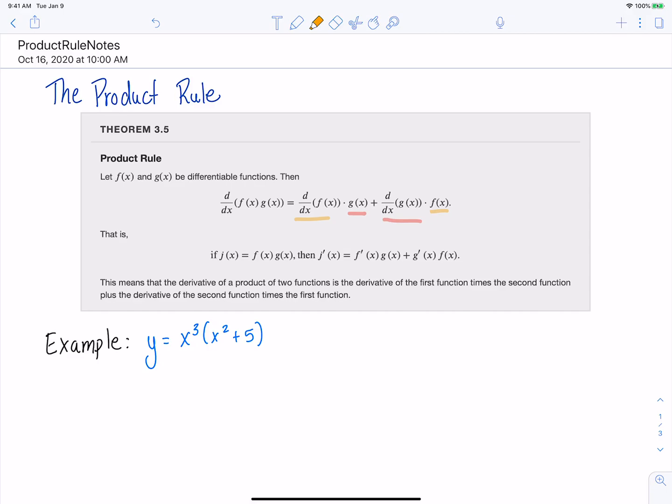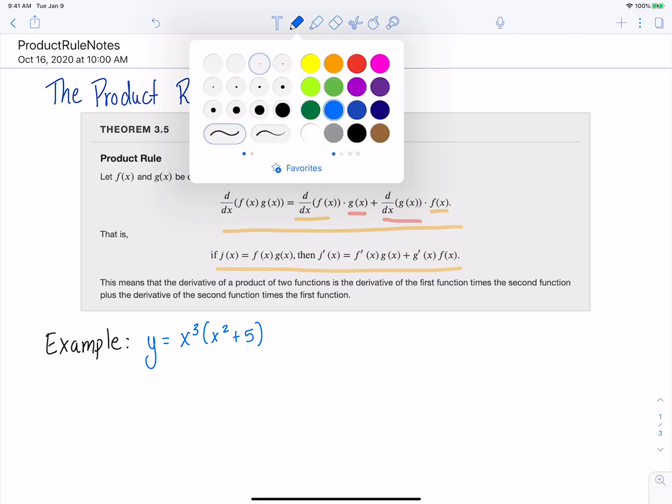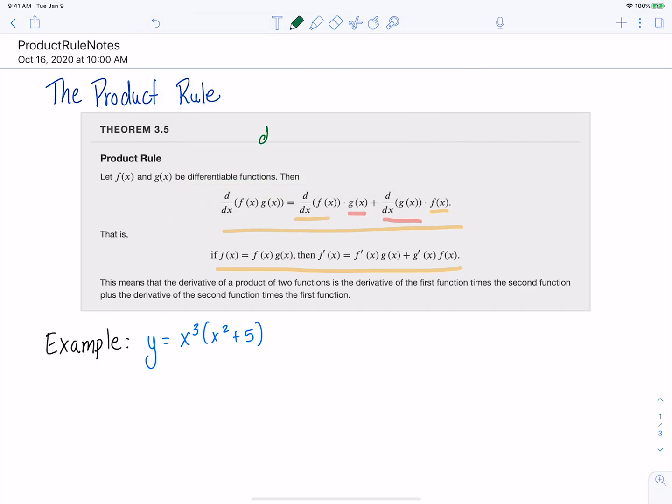So OpenStax has it written here in Leibniz form. That's that first form that we've got right here, and it's also got it written in prime form. I actually like to write it kind of as a combination of the two, where I write d/dx of f times g.